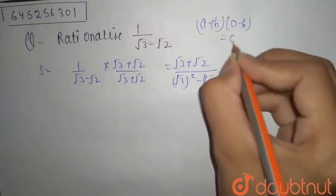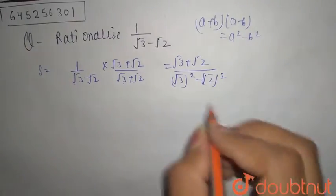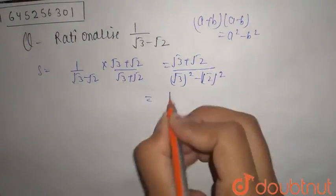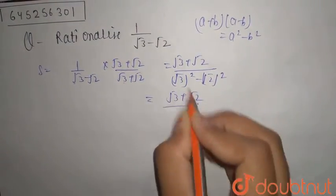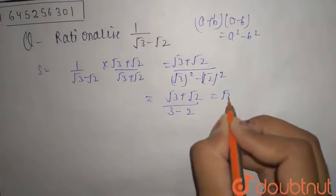So we have now root 3 plus root 2 as it is. Root 3 squared is 3 and root 2 squared is 2. So root 3 plus root 2 divided by 1.